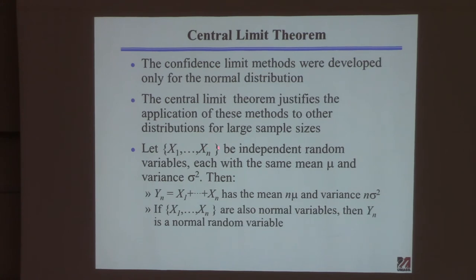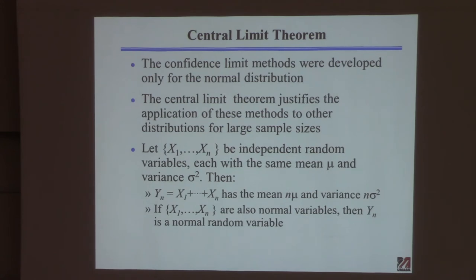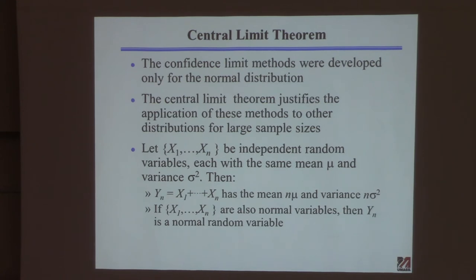Here's the underlying math: you have random variables x1 through xn — independent with the same mean and variance. You form a variable y_n as the sum of all these random variables. Then you can prove that the mean of y_n is n times mu, and the variance of y_n is n times sigma-squared.